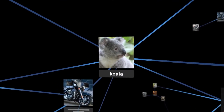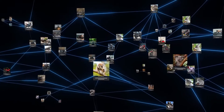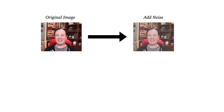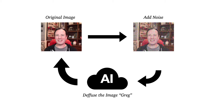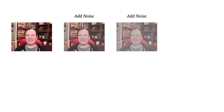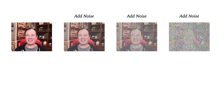Next, the model figures out how to remove noise. It does this by looking at the original image and then adding noise to that image, or diffusion. The artificial intelligence then gets really good at diffusing the noise — figuring out how that image looks without the noise. We do this with more and more noise, and over time the AI gets stable at diffusing the noise.